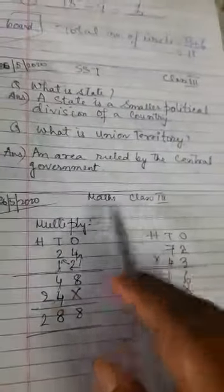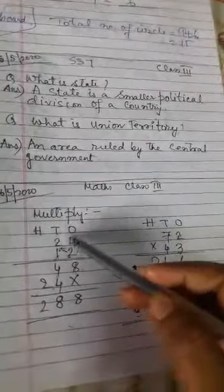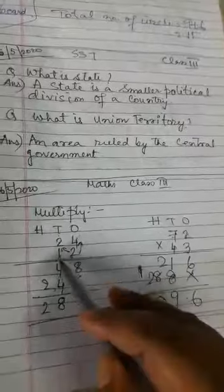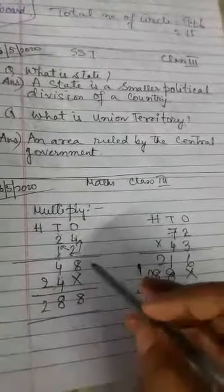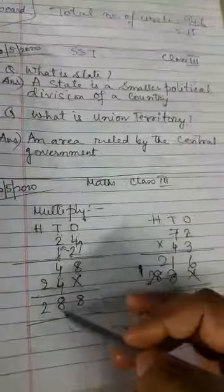Good morning students, Maths Class 3. This is 26/5/2020. Multiplication: see 4 × 2 = 8, 2 × 2 = 4, 4 × 1 = 4, 2 × 1 = 2. Then we'll add: 8, 4 + 4 = 8.